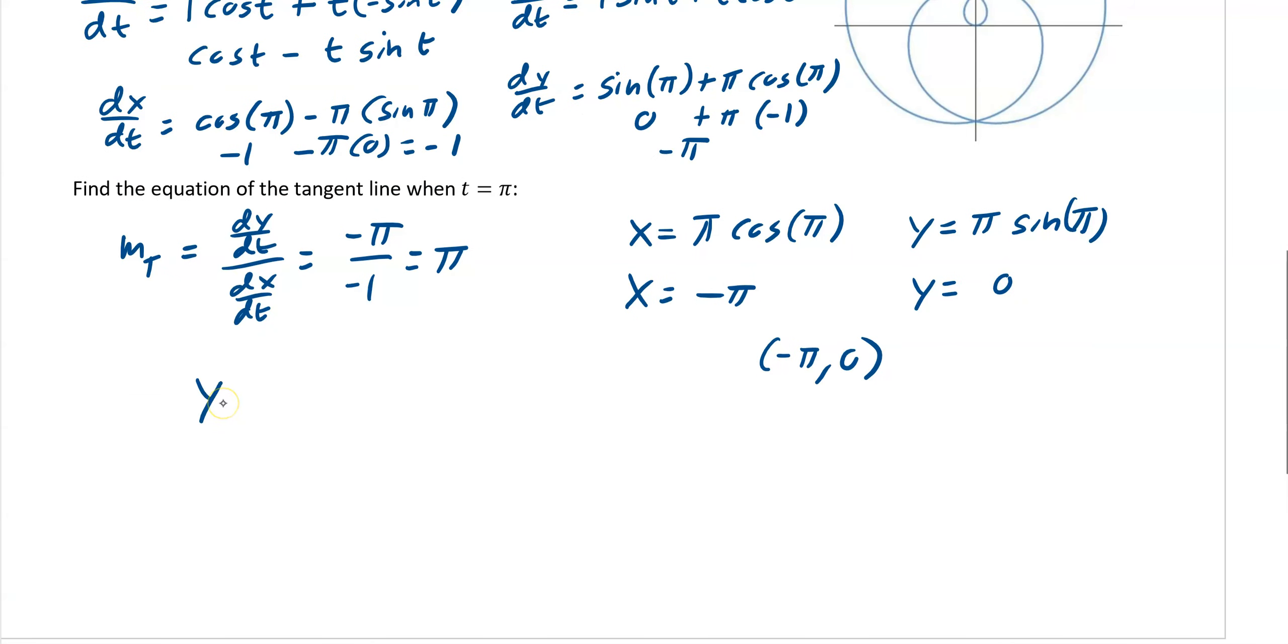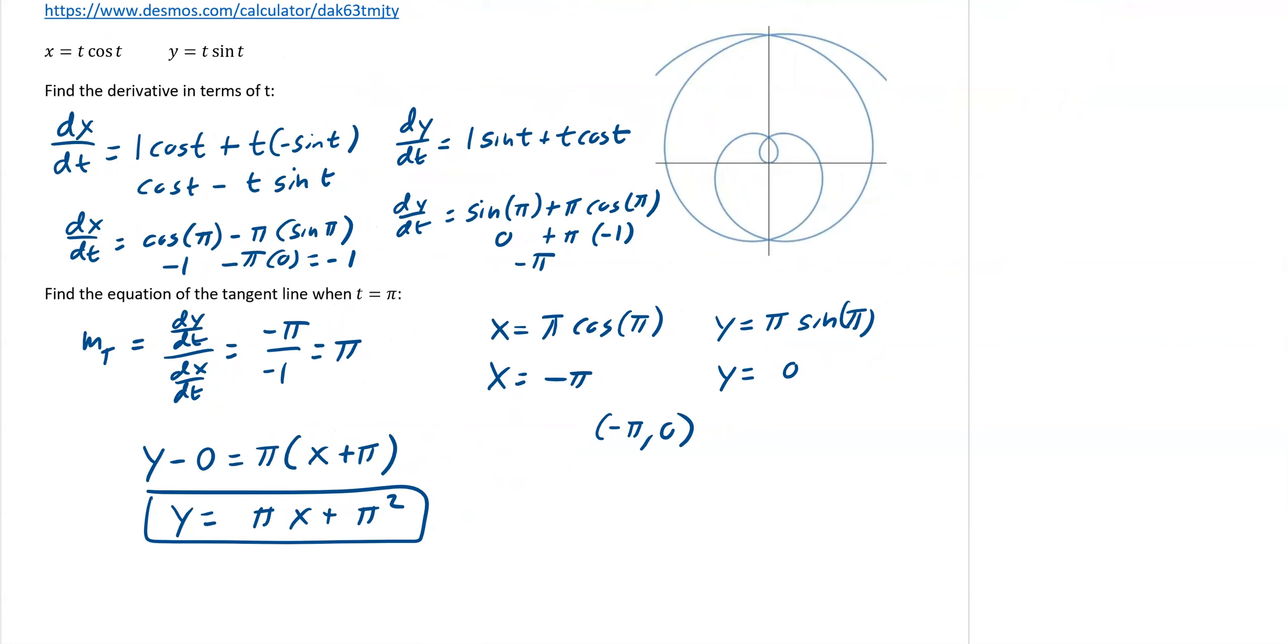So now we just do our y minus y, π x minus, so that would be plus π. So we get y equals π x plus π squared. And there you go. So that's finding the tangent line. So there's nothing really new here. You're finding an x and y coordinate. You're finding a slope. And then you're plugging it in the formula. It's just you're using the parameter t to find both. So you're making a slope formula, and we're plugging in π to give us the slope. And then we're taking our x and y formulas, and we're plugging in π to get the x and the y's. And then there's our answer.